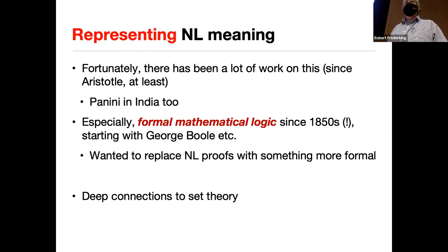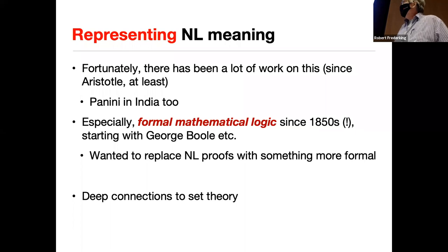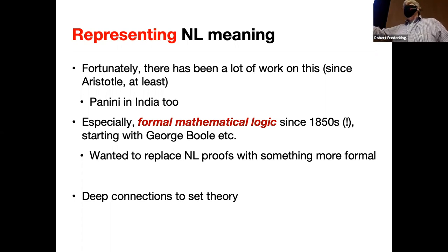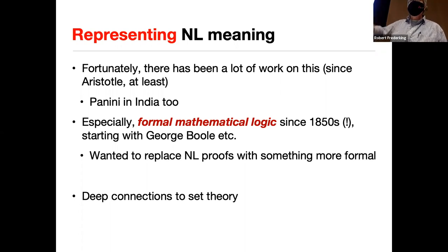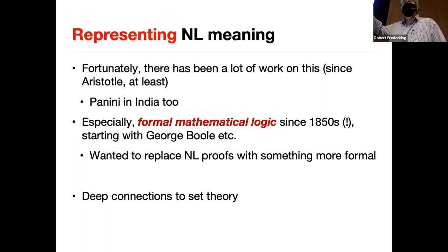Boolean logic and Boolean variables are named after George Boole, one of the guys who worked on this back then. Mathematicians were upset because they would sometimes prove things everyone accepted, and a few years later someone found a mistake. They wanted a mechanical way of automatically verifying that a proof was true without depending on unreliable people. In doing that, they kind of invented set theory and a number of other things that are widely used, with very deep connections to a lot of mathematical things.